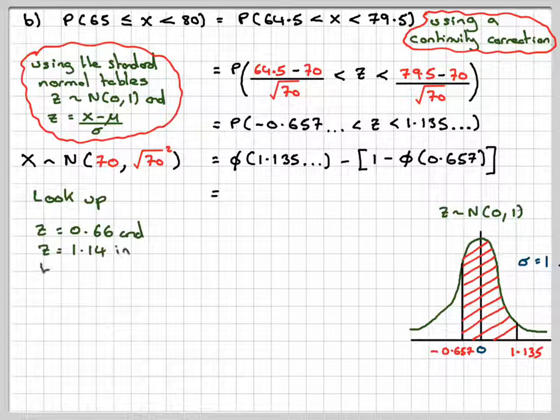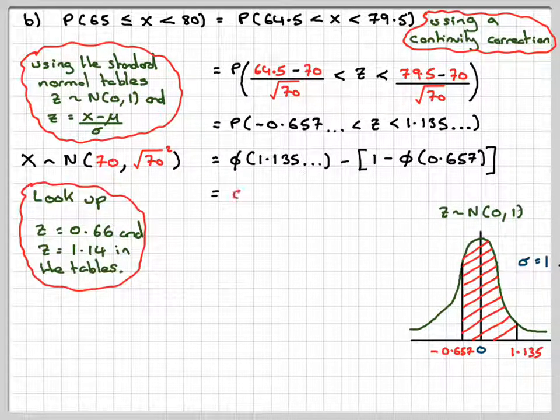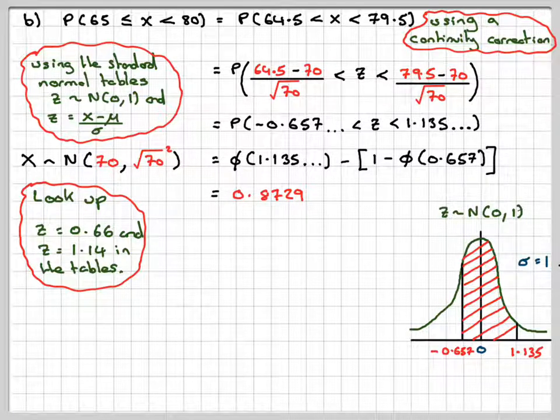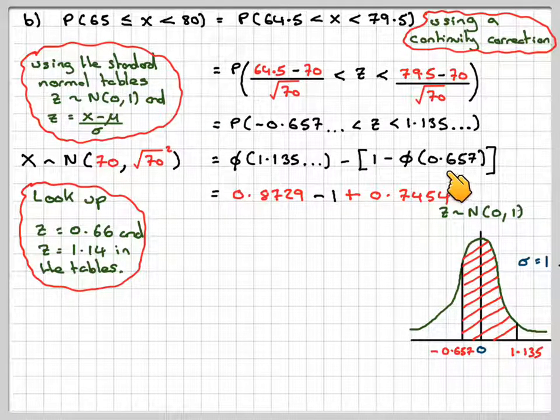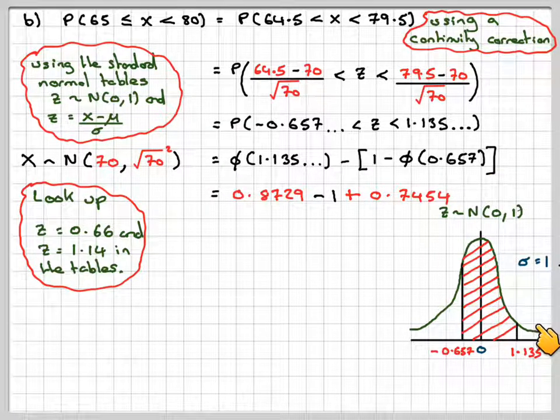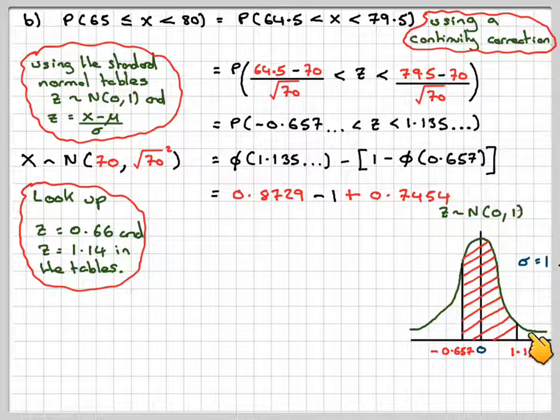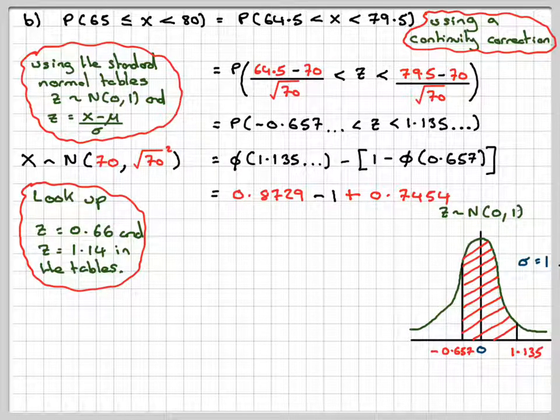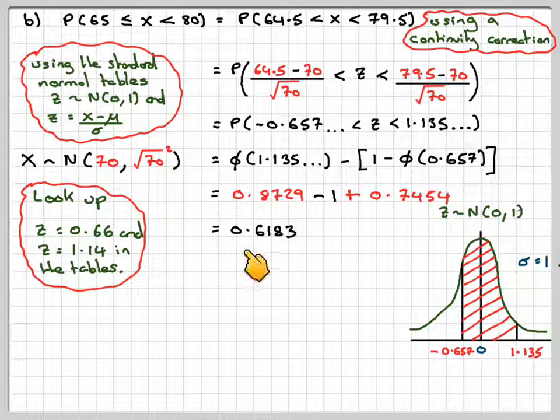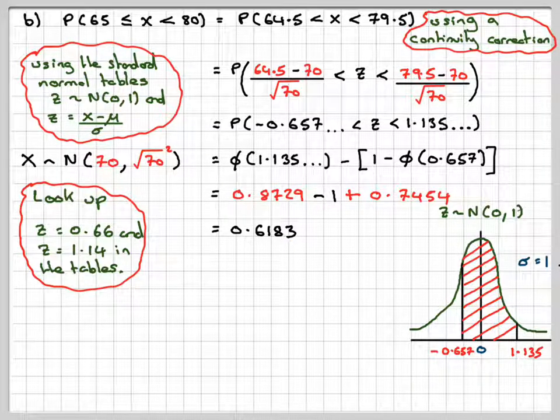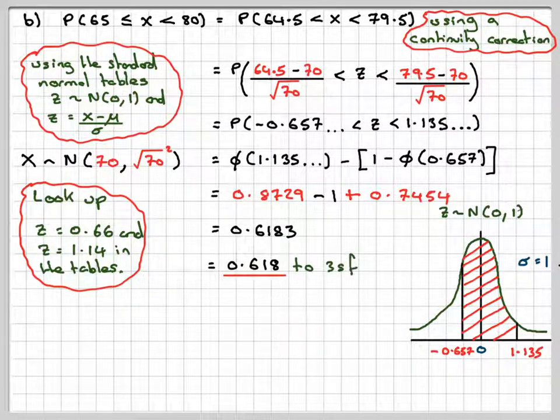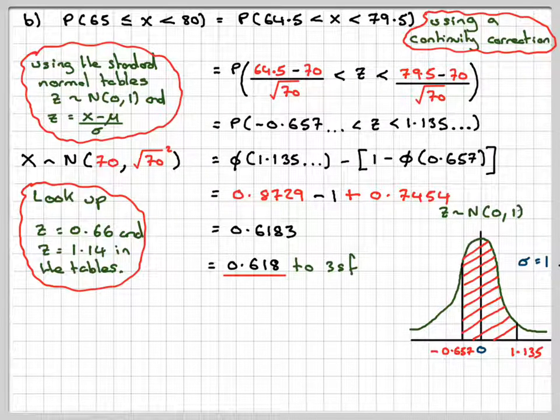We're going to look at those two values in the table, and we're going to get 0.8729 minus 1 plus 0.7454. We're doing 1 minus here because we have to flip this over and do the thing in reverse because we only have positive values for our table. That gives me 0.618 to three significant figures.